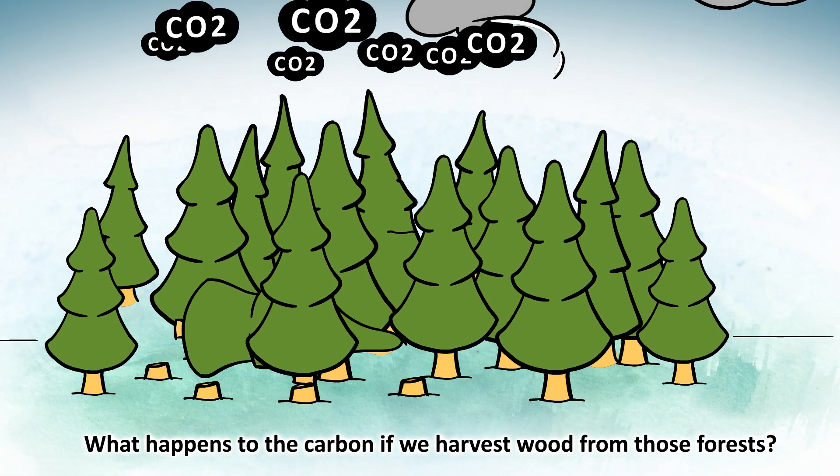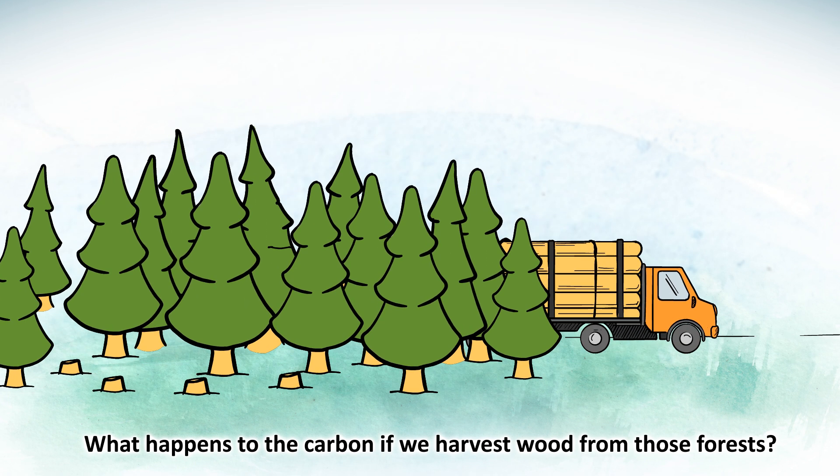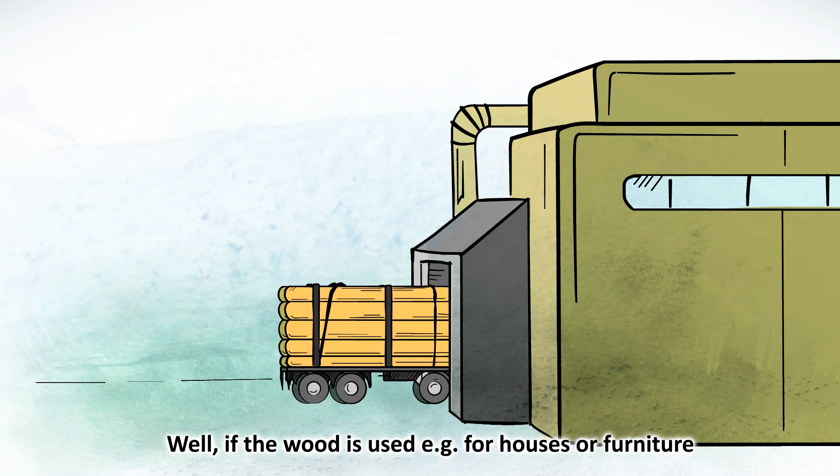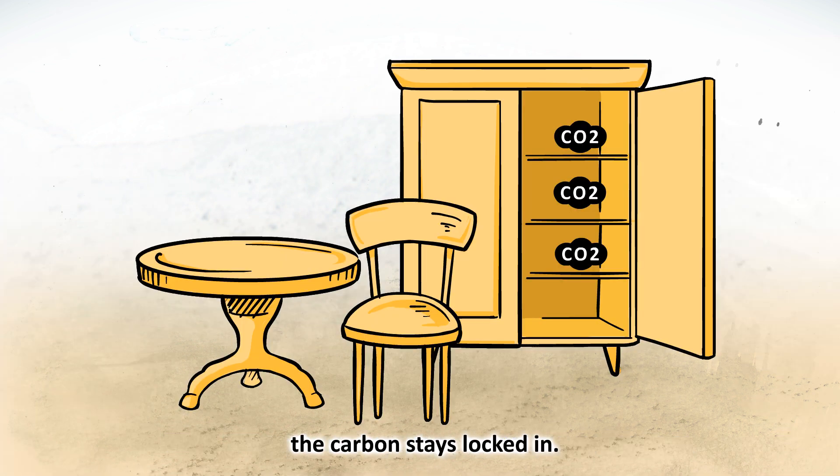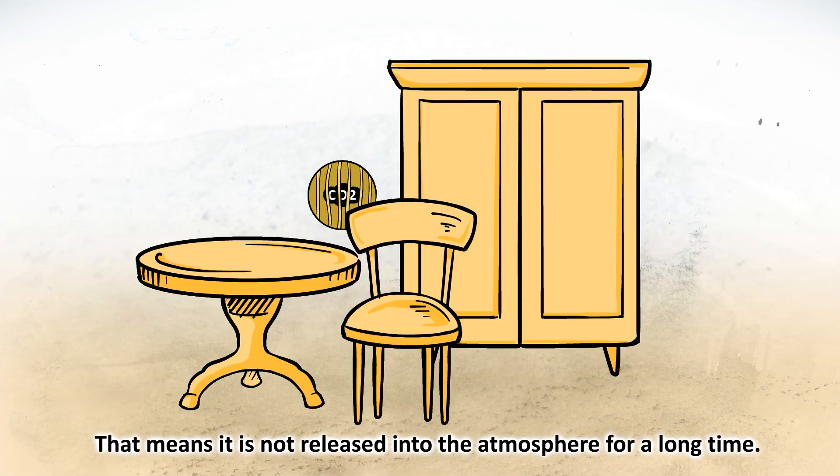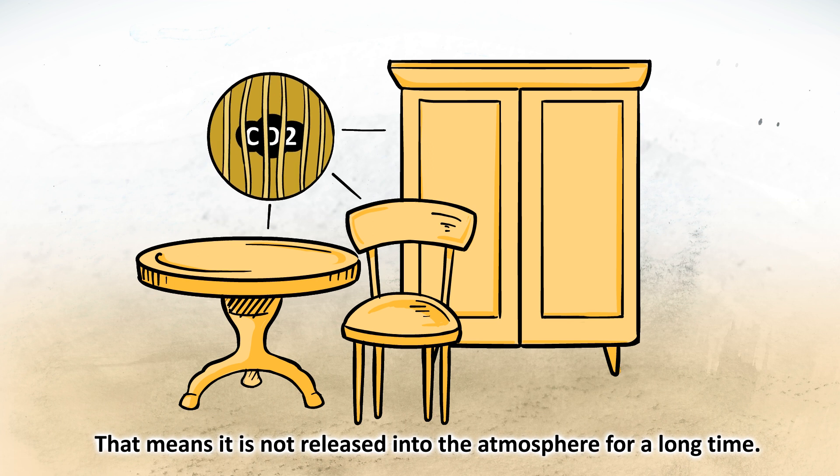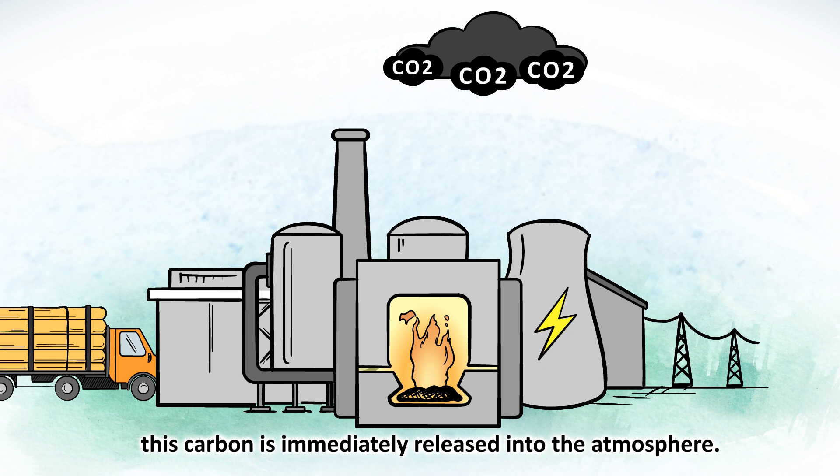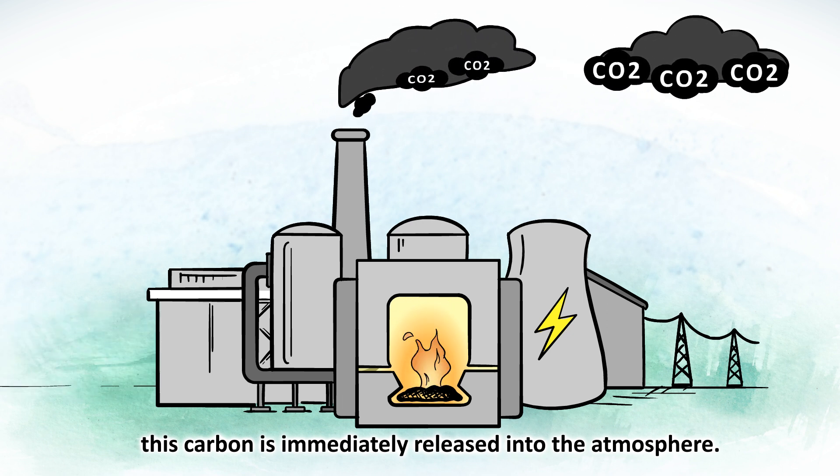What happens to the carbon if we harvest wood from those forests? Well, if the wood is used, for example for houses or furniture, the carbon stays locked in. That means it is not released into the atmosphere for a long time. But if we burn the wood for energy, this carbon is immediately released into the atmosphere.